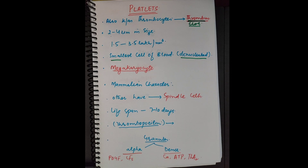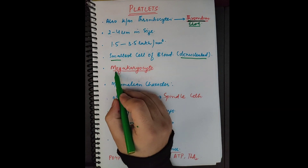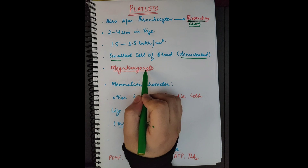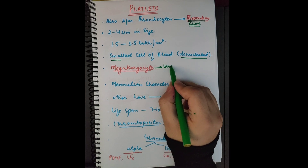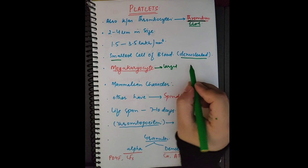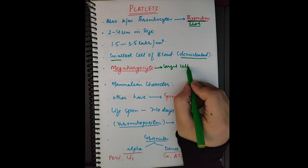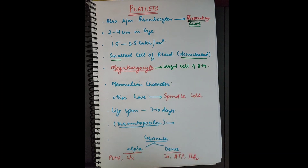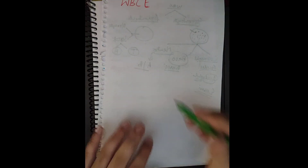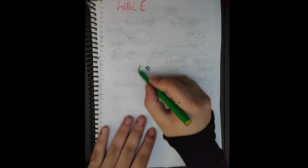The formation of platelets is a very important and high-yield point. These platelets are formed from a cell known as the megakaryocyte. The megakaryocyte is the largest cell of the bone marrow, and it is this large cell that forms the platelets.